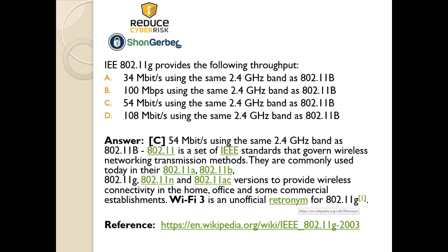Question one: IEEE 802.11g — that's your Wi-Fi standard from IEEE — provides the following throughput. A: 34 megabits per second using the same 2.4 gigahertz band as 802.11b. B: 100 megabits per second using the same 2.4 gigahertz band as 802.11b. C: 54 megabits per second using the same 2.4 gigahertz band as 802.11b. Or D: 108 megabits per second using the same 2.4 gigahertz band as 802.11b.